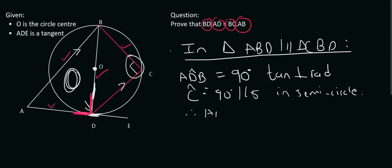So therefore ADB, which is 90, is going to be the same as angle C, which is also 90. So we've got one angle so far. So that's one.